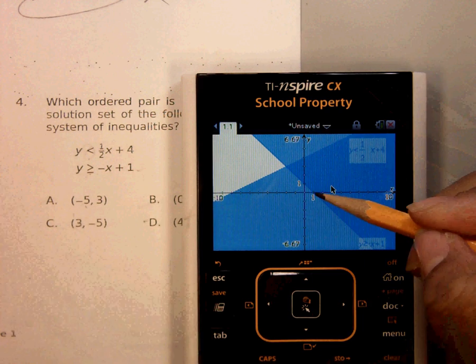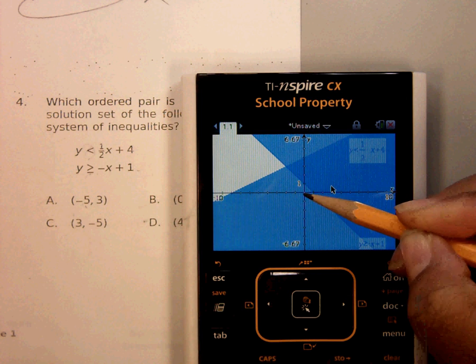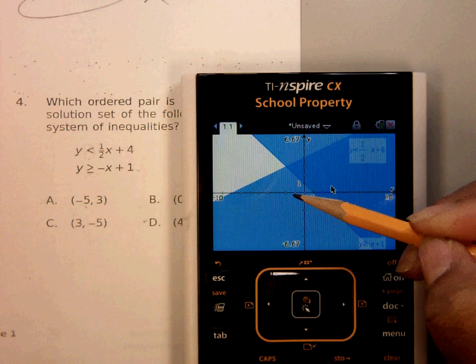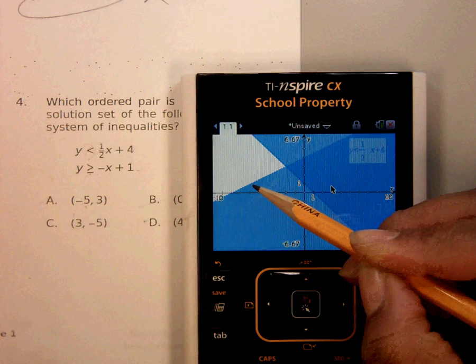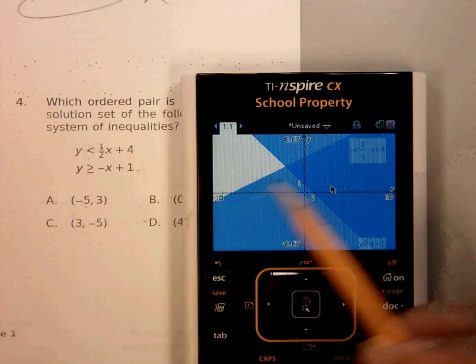So which one would be in this shaded region? Negative five, three. So one, two, oh, negative five. That's positive five. Go the other way. One, two, three, four, five. Positive three. One, two, three. We can stop. We know we're going opposite of that direction.